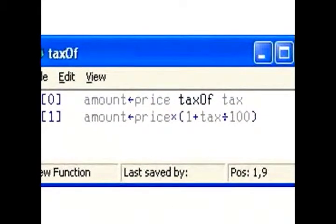What we need to do is now fill in the rest. So taxOf takes a left argument and a right argument and returns a result. In this case, the result will be called amount, the left argument will be called price, and the right argument will be called tax. The way we compute the amount is the price times 1 plus the tax divided by 100. We know that the tax is in percent, so if we say 18, we have to calculate 18%. So 18 divided by 100 is 18%. We add 1 to that to include the price, and we multiply by the price, and this will give us the final amount.